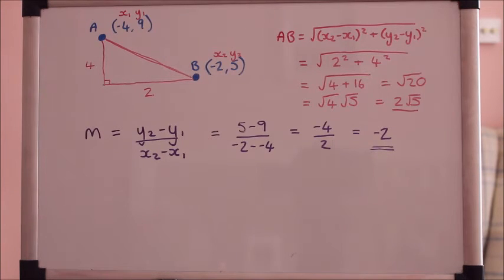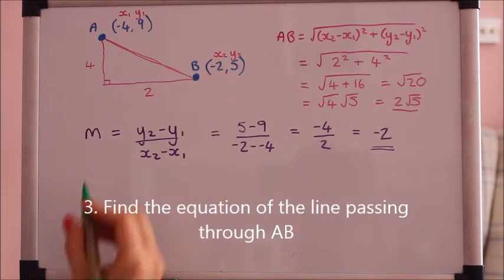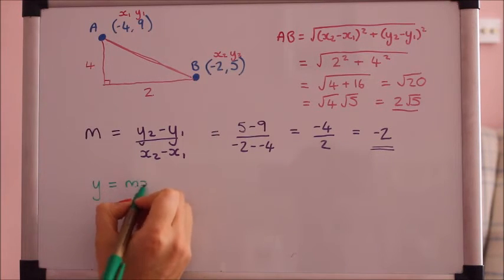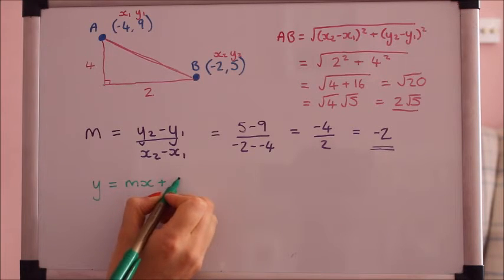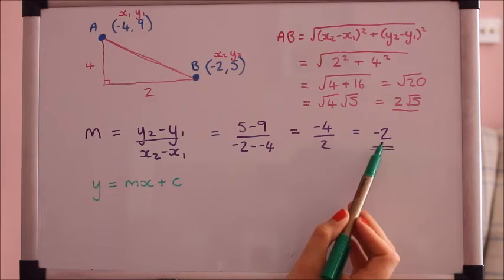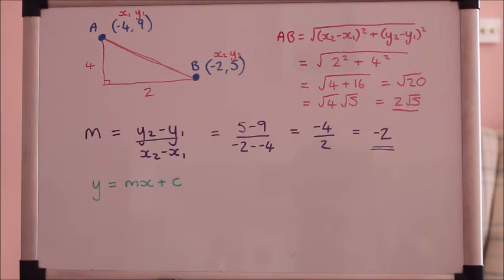Okay the next thing I want to do now we've got the gradient is to find the equation of the line running through points A and B. To find the equation of a straight line you can use y equals mx plus c. And to find the equation you need two things: the gradient and a point that it goes through. We have just worked out the gradient and we've got two points that it goes through so we're ready to go.